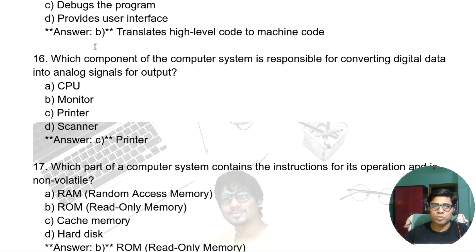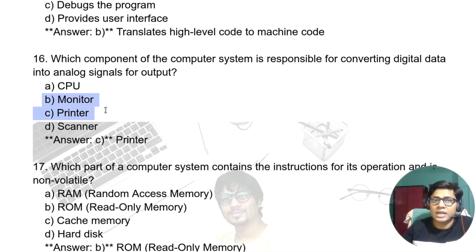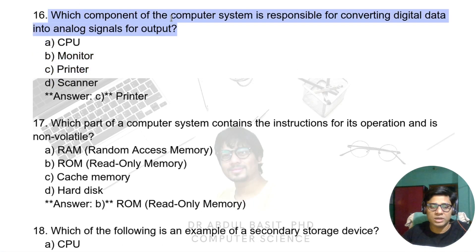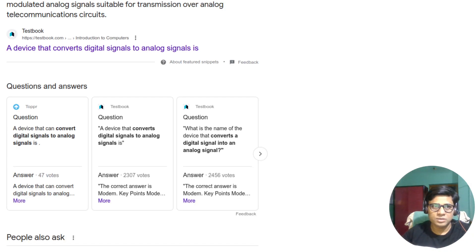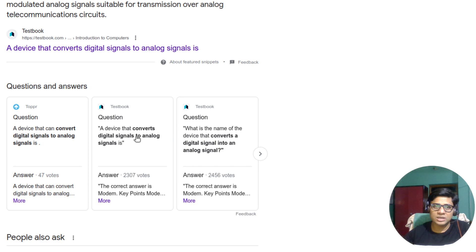Which component of the computer system is responsible for converting digital data into an analog signal for output? The options include printer, monitor, and scanner — scanner is not an output device. The monitor displays digital data as an analog signal. However, the most accurate answer is the modem. A modem converts digital signals to analog signals.